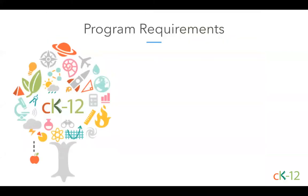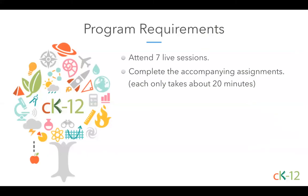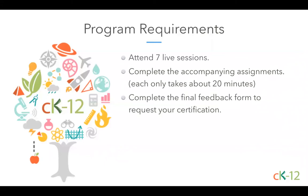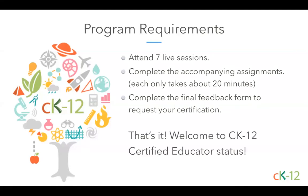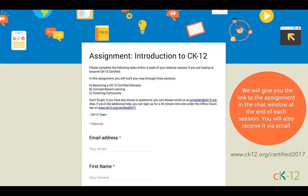To quickly recap, here are the things you need to do to complete the summer certification program: attend seven live sessions, complete the accompanying assignments — each designed to take about 20 minutes — and complete a final feedback form to request your certification. That's it. For each session you attend, we have created an accompanying assignment which is required to become CK-12 Certified. They're only about 20 minutes each and they're designed to complement the webinars with steps to explore CK-12, give you a start on customization, and help you think about next steps. You'll have about a week to complete each of these Google Forms, which we will share in the chat window and each follow-up email.